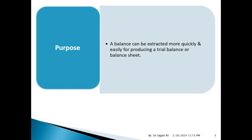In a trial balance or balance sheet, we show the total receivable and total payable balance, not every customer and supplier balance by name. The control account records the total. For example, if you have 100 customers, the receivable control account gives the total receivable balance. Similarly, the payable control account summarizes your supplier balances. This is the main purpose.